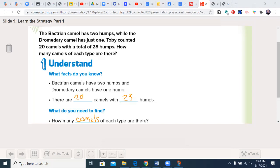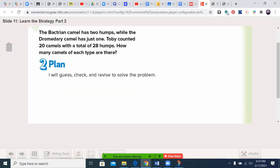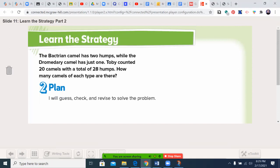In our first story problem, the Bactrian camel has two humps while the dromedary camel just one. Toby counted 20 camels with a total of 28 humps. How many camels of each type are there? So what facts do we know? There are 20 camels and there are 28 humps. Go ahead and fill that in. This is all part of understanding the problem.